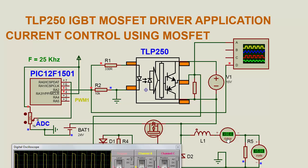The current is around 50 amperes, and the voltage decreases from 13 volts down to 5 to 9 volts. This is the working demonstration of the IGBT MOSFET driver TLP250.